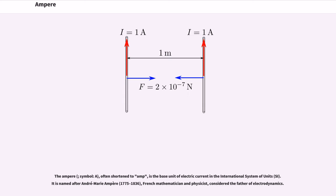The ampere, symbol A, often shortened to amp, is the base unit of electric current in the International System of Units (SI). It is named after André-Marie Ampère, 1775-1836, French mathematician and physicist, considered the father of electrodynamics.